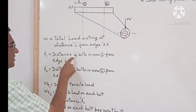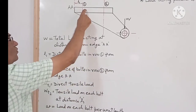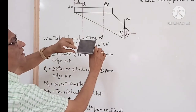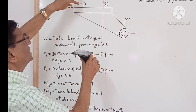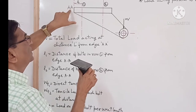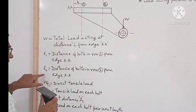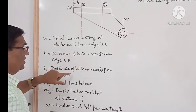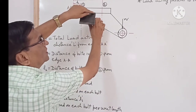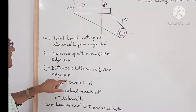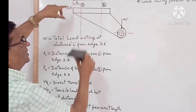L1 is the distance of bolts in row 1 from the edge AA. In row 1, two bolts are there at a distance L1 from edge AA. L2 is the distance of bolts in row 2 from edge AA. This distance is L2.